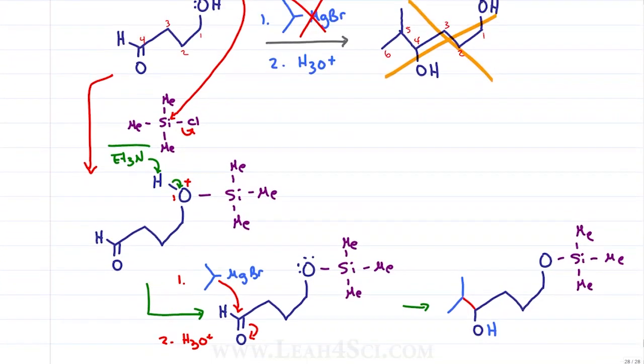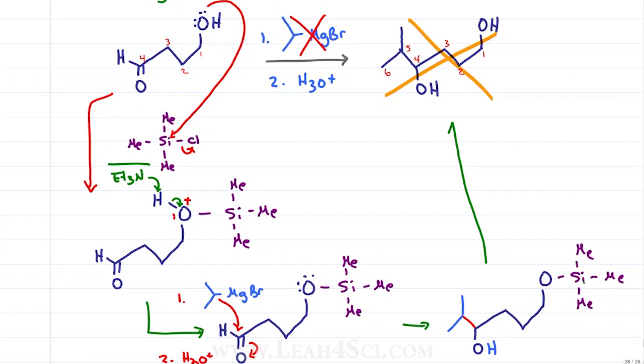Now all we have to do is remove that protecting group, which is very simple. We bring in our TBAF, which is the source of fluoride ions, a mechanism that you very likely don't have to know, and simply recognize that fluoride will kick this group out and reform the alcohol, finally giving us the product that we expected from the beginning.